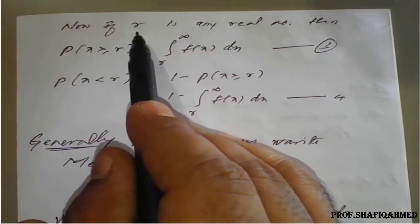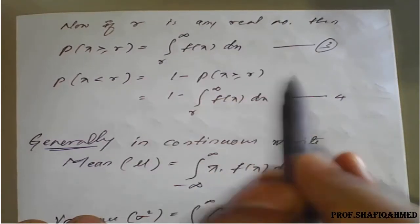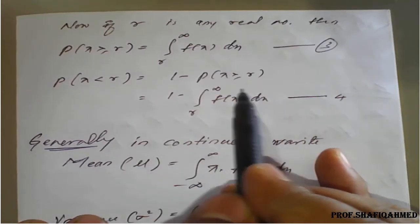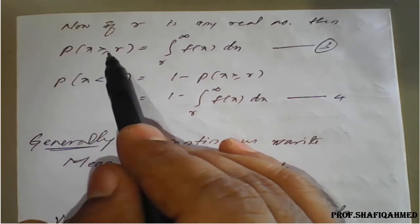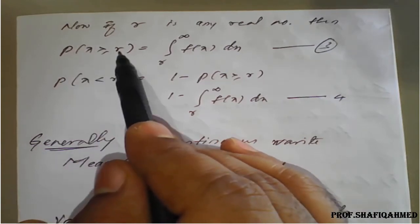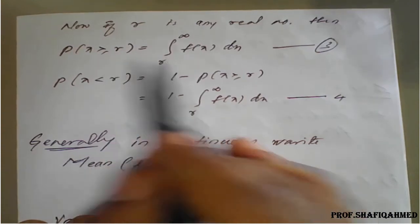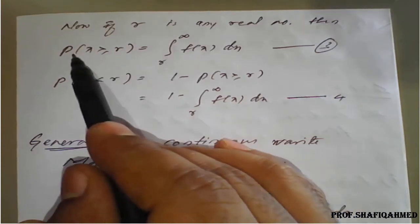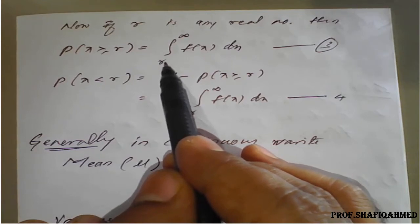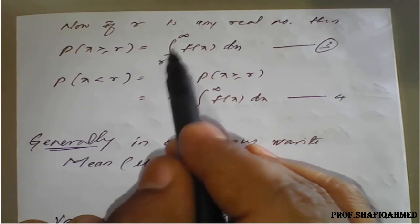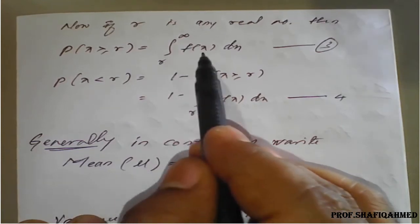Now, for r being any real number, these are the results which are helpful to solve examples. The probability of X greater than or equal to r — where r is a real number — can be written as the integration from r to infinity of f(x) dx.